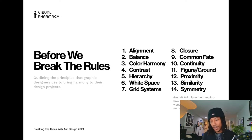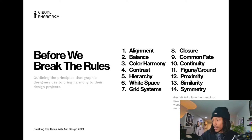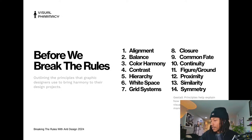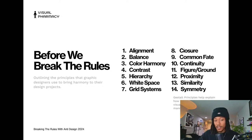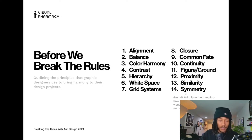Before we break the rules, we have to learn them. Here are some common graphic design principles you learn in design school: alignment, balance, color harmony, contrast, hierarchy, white space, and grids — which provide a sense of organization in layouts. Here's also a list of gestalt principles, which are more ideas than rules but still play a part in how we design things visually.